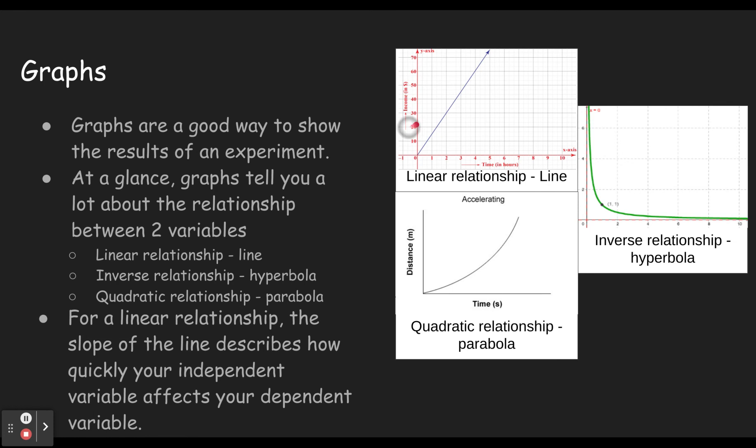Time would be our independent variable because that goes on the x-axis. So this is the slope of this line being fairly steep, meaning means that our dependent variable changes fairly quickly as time increases. In other words, our income increases fairly quickly as time increases. You see it going up there fairly quickly.